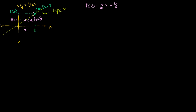So how do we find the slope between these two points, or more generally of this entire line? Because a line has a consistent slope the whole way through. Slope is equal to rise over run — you might have seen that when you first learned algebra. Or another way of writing it: it's change in y over change in x. So let's figure out what the change in y over the change in x is for this particular case.